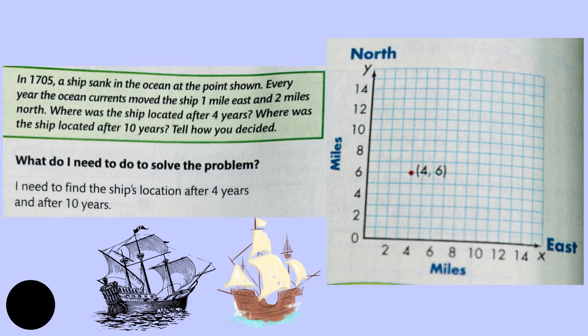Another example: In 1705, a ship sank in the ocean at the point shown. Every year, the ocean currents moved the ship one mile east and two miles north.